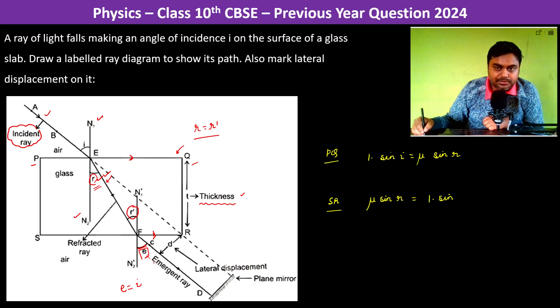I am writing r here because r' is going to be equal to r. Now if you compare these two equations, clearly e is going to be equal to i.